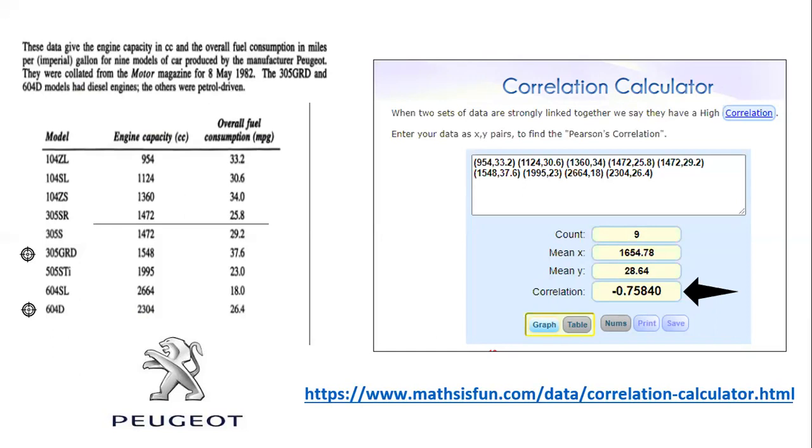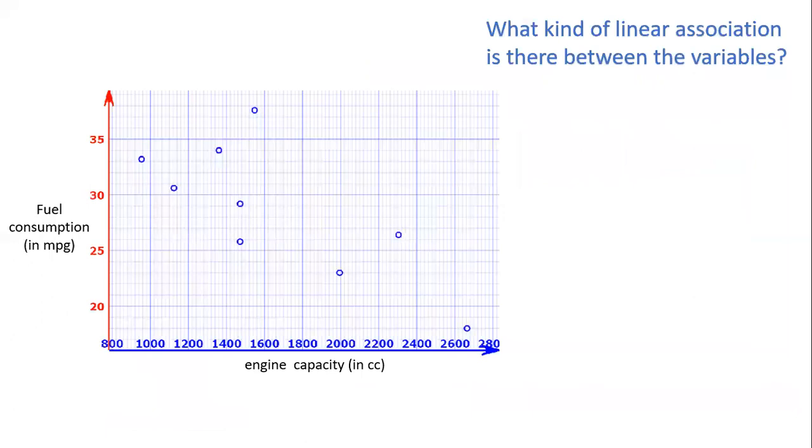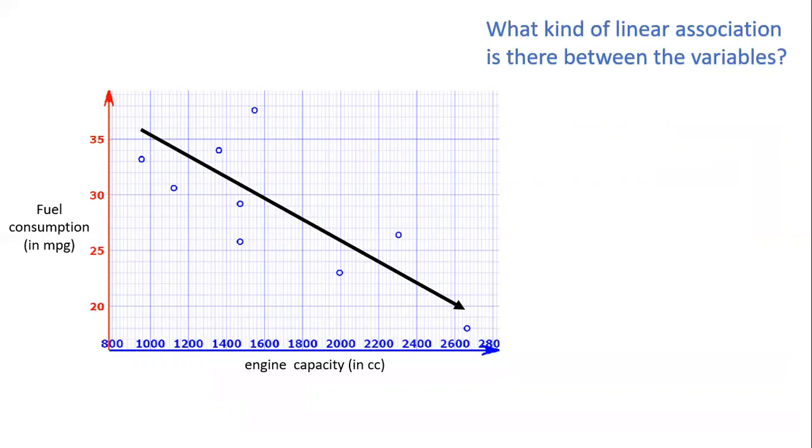What does that tell us about this relationship? Well here's a scatter plot that was also produced by that very same website and it shows the data points for those nine brands of cars. When we look at that scatter plot we can see that there is a trend and that specific trend is one that you should know is called a negative association. A negative association is whenever the explanatory variable increases we see the response variable tending to decrease. That is the trend that we see here.